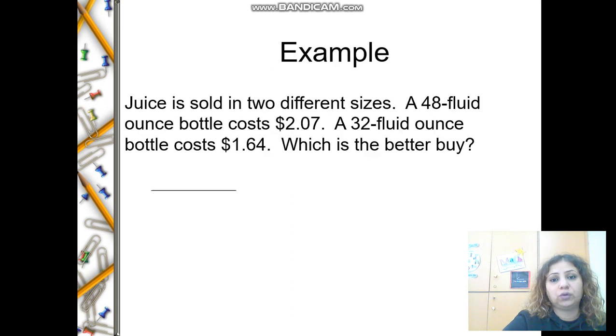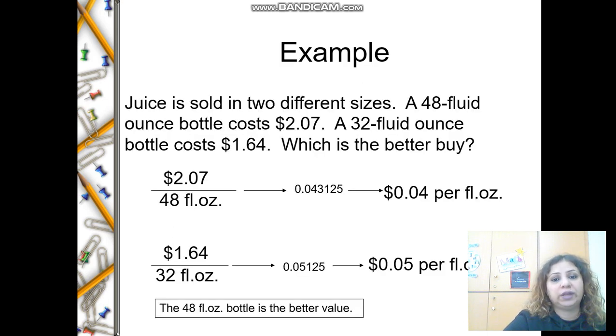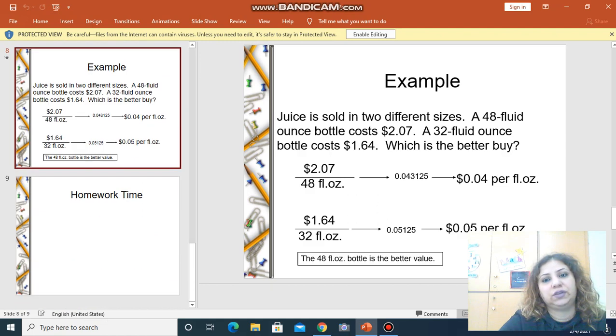So when you compare two different rates, you need to get the unit rate for each one of them by dividing the numerator by the denominator. This way you can compare which price is less or more. Thank you and see you in the next video.